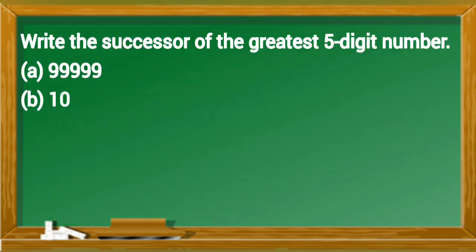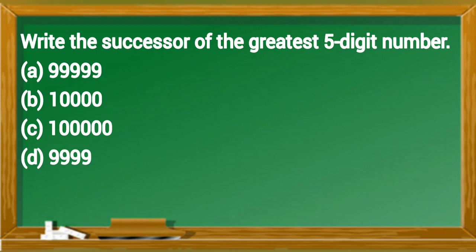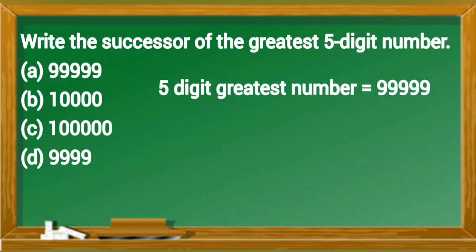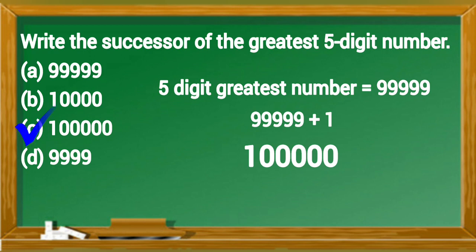Write the successor of the greatest 5-digit number. The 5-digit greatest number is 99999. By adding 1 to any number, the successor of that can be found. 99999 plus 1, that is 1 lakh. So 1 lakh is the successor of the greatest 5-digit number. So option C is correct answer.